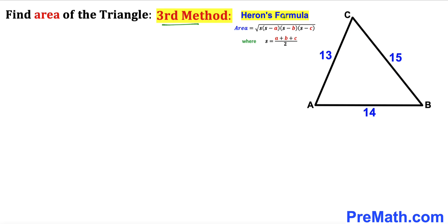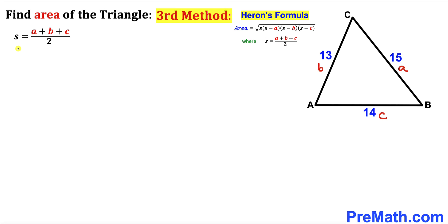Here's the third method using Heron's formula to calculate the area of the triangle. Label the sides as a, b, and c. The area equals √(s(s−a)(s−b)(s−c)), where s = (a + b + c) / 2 is called the semi-perimeter. Filling in the values: s = (15 + 13 + 14) / 2 = 42 / 2 = 21.